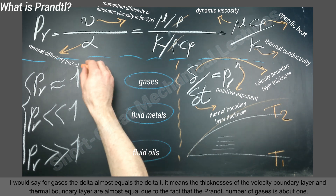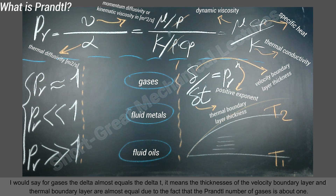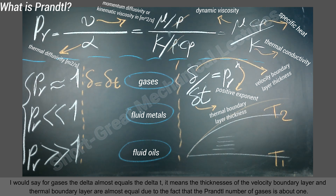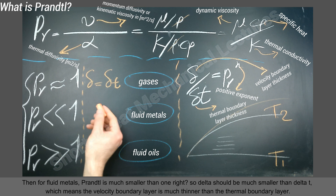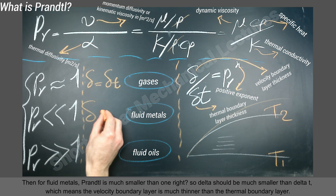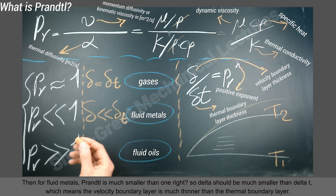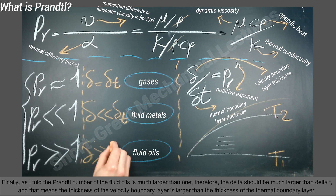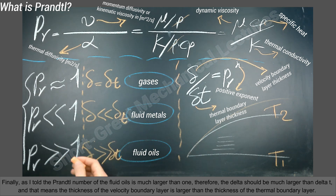Returning to our examples: for gases, δ ≈ δt, meaning the thicknesses of the velocity and thermal boundary layers are almost equal, because the Prandtl number of gases is about 1. For liquid metals, Prandtl is much smaller than 1, so δ is much smaller than δt — the velocity boundary layer is much thinner than the thermal boundary layer. For fluid oils, Prandtl is much larger than 1, so δ is much larger than δt — the velocity boundary layer thickness is larger than the thermal boundary layer thickness.